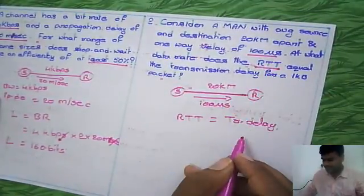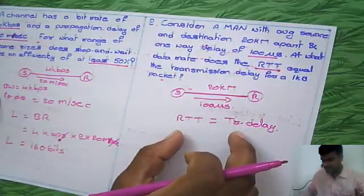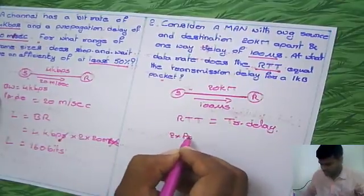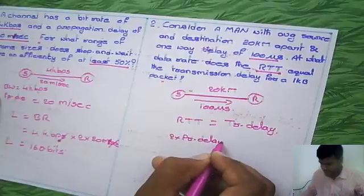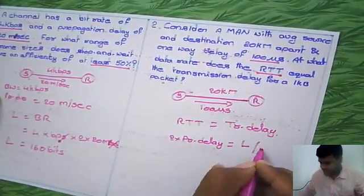The formula is given: at what bandwidth will this condition be satisfied? Round-trip time is 2 times propagation delay, and transmission delay is length divided by bandwidth.